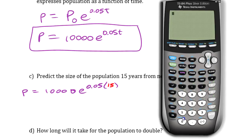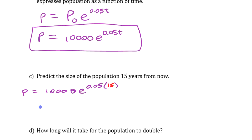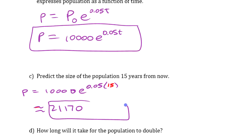So we've got 10,000 e to the power of 0.05. Now on here you don't need to put brackets in there, but depending on the calculator you're using, you might need to use brackets times 15. If I hit enter there: 21,170 people.